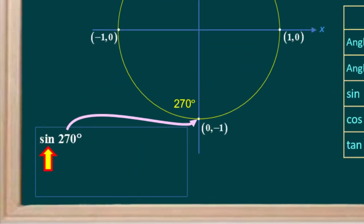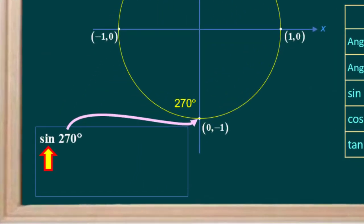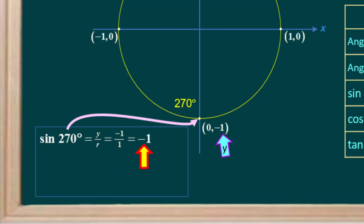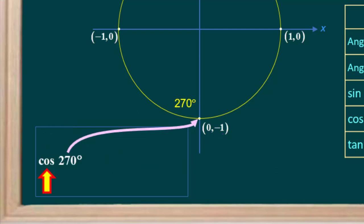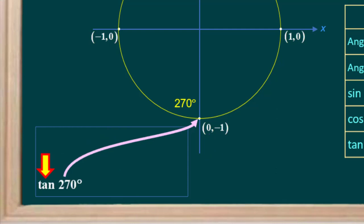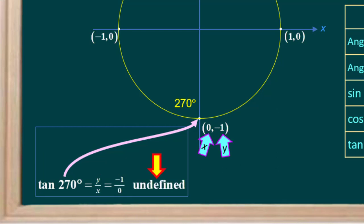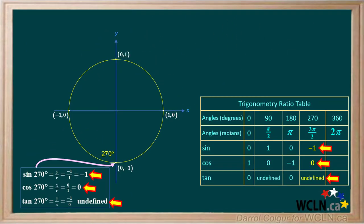Now we'll go to 270 degrees and start by determining the sine. The sine of 270 degrees is y over r, which is negative 1 over 1, or negative 1. Next we'll find the cosine of 270 degrees. The cosine is x over r, which is 0 over 1, or 0. Now for the tangent of 270 degrees, the tangent is y over x, which is negative 1 over 0, and negative 1 over 0 is undefined. We'll record the values of sine, cosine, and tangent for 270 degrees in our table.